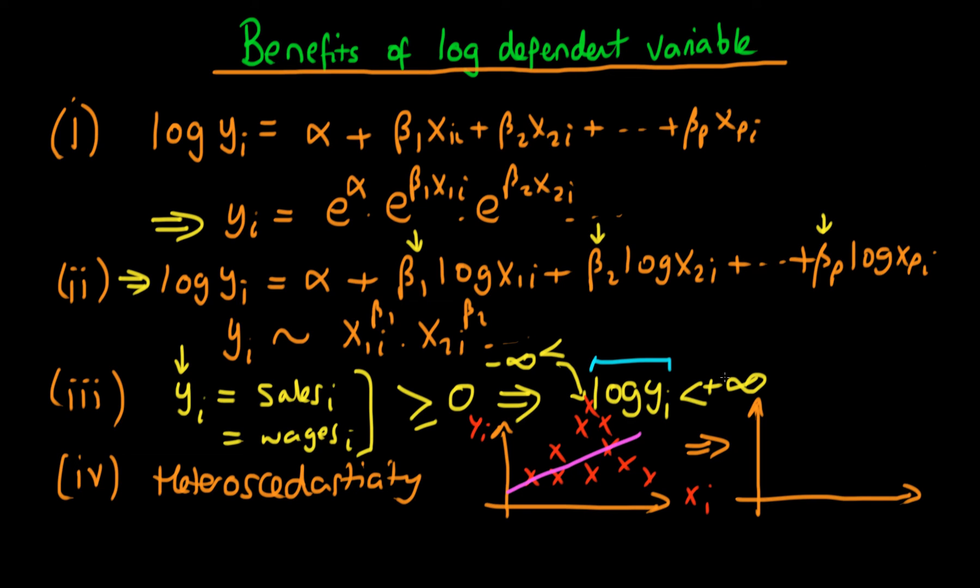So by actually taking a log of my dependent variable and often taking the log of my independent variable then you can actually transform to situations which practically you've actually got rid of this heteroscedasticity because it's just been suppressed so much by the log function.